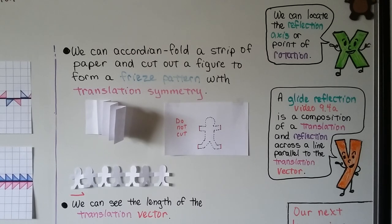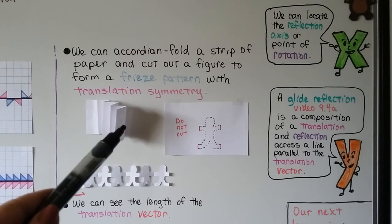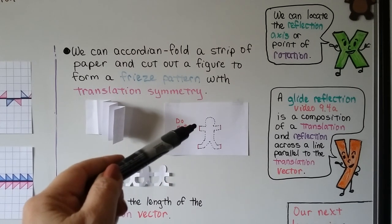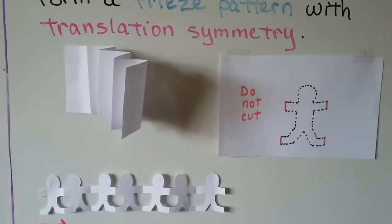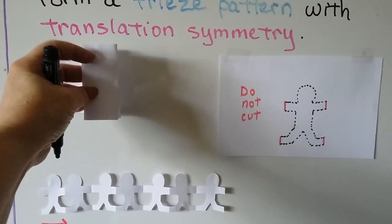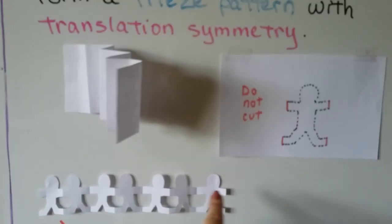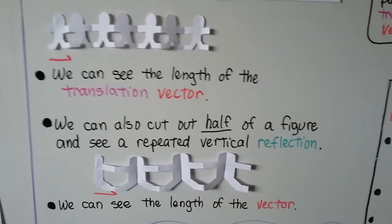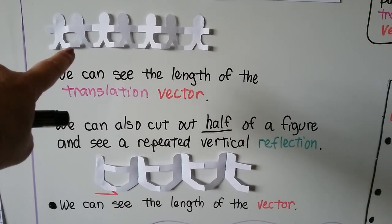We can accordion fold a strip of paper and cut out a figure to form a freeze pattern with translation symmetry — just fold it back and forth like an accordion. Once it's all folded, we draw a little person and don't cut the tips of his hands and feet at the folded points. By leaving those uncut, the fold stays connected. When we unfold them, we have little men holding hands — a freeze pattern with translation symmetry. The length of the translation vector goes from this tip to where it folds.